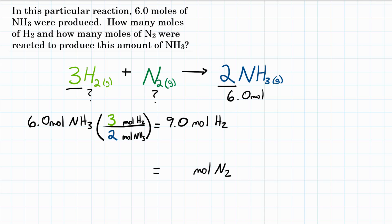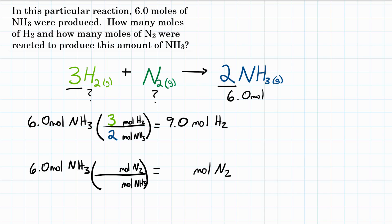Let's do the same thing for nitrogen, for N2. We're starting with 6.0 moles of NH3 again and we want to convert that to moles of N2. We want to get rid of moles of NH3 and we want moles of N2. We look at our coefficients — the coefficient for N2 is 1, because there isn't anything written there, and for NH3 it's 2. So for every 2 moles of NH3 that we produce, we must have reacted 1 mole of N2.